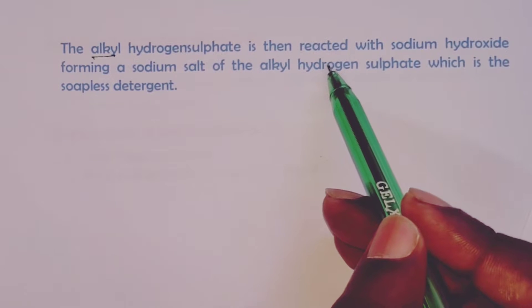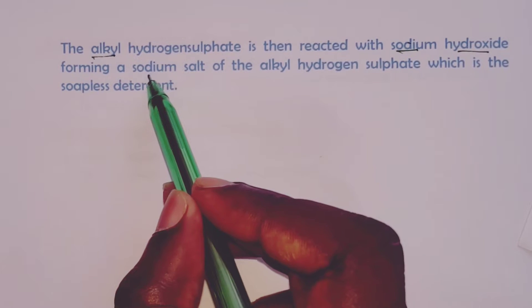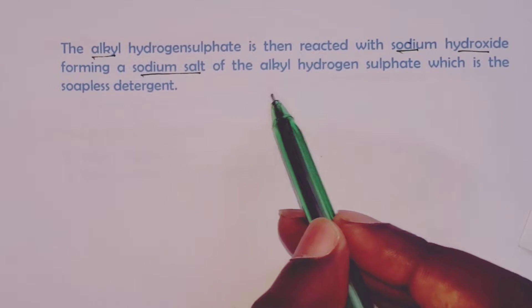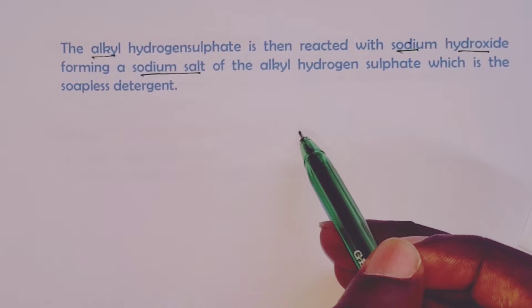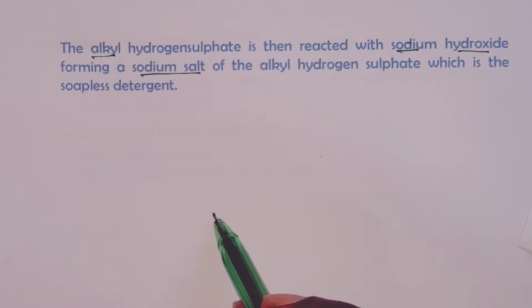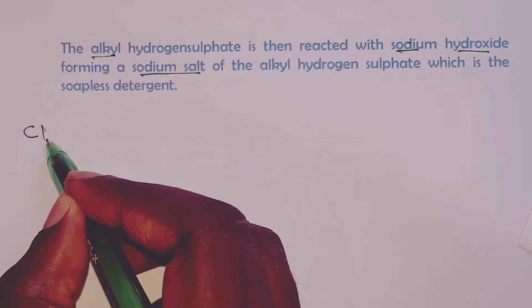So once we obtain the alkyl hydrogen sulfate, we then react it with an alkali sodium hydroxide to form a sodium salt of the same, which now becomes our soapless detergent. The reaction can be represented in an equation as follows.